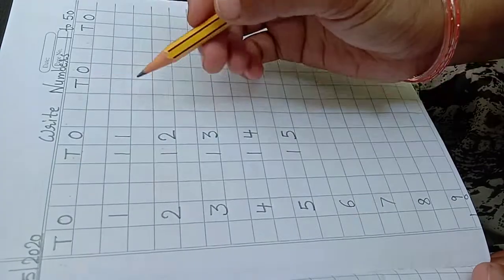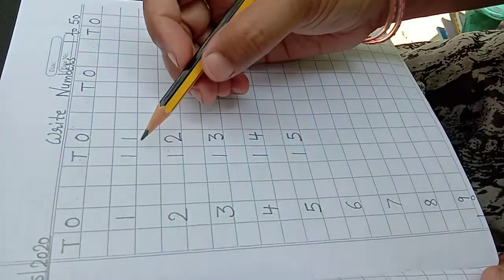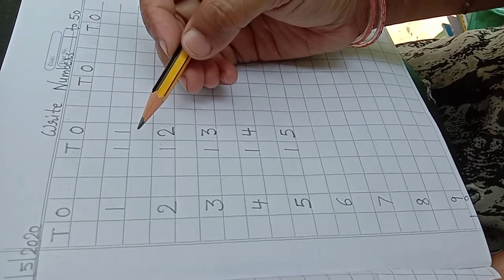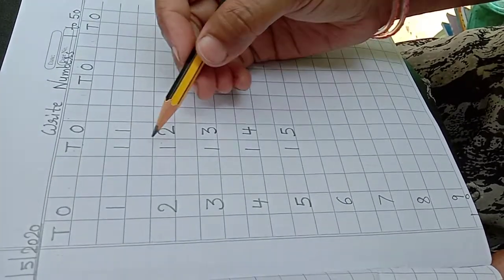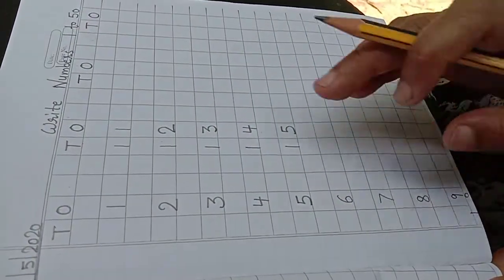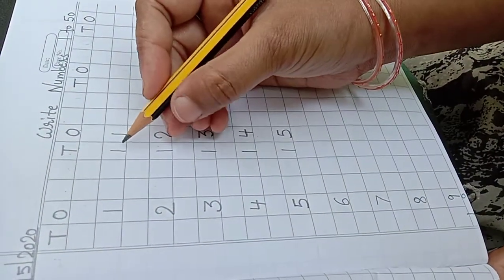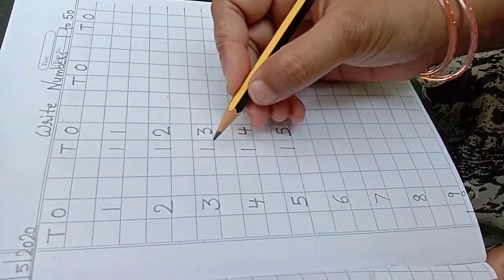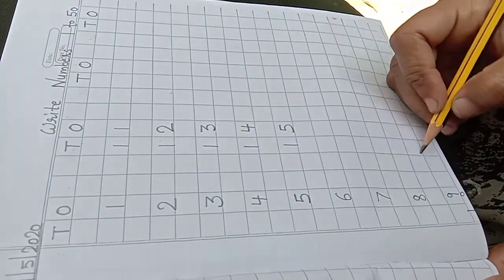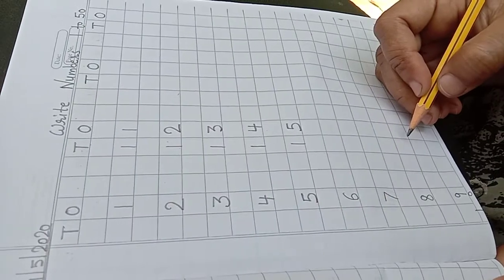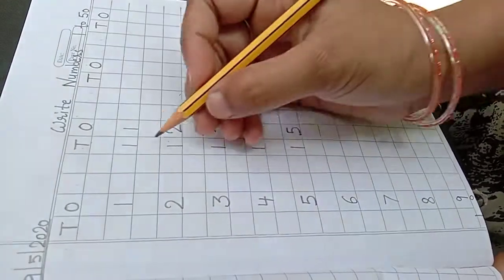Yahan pe two box. Tens and ones. This is very important. You have to take the tens digit first. So when you have to write, you will write the tens digit first, then you put the ones digit. This is the right method. You write both together.